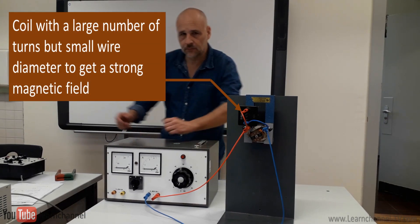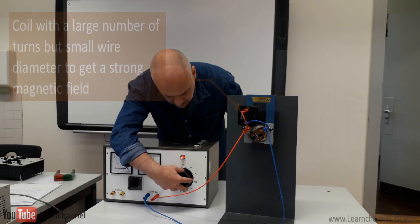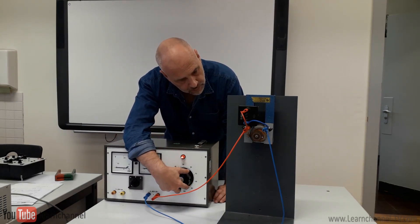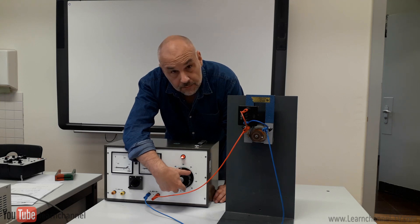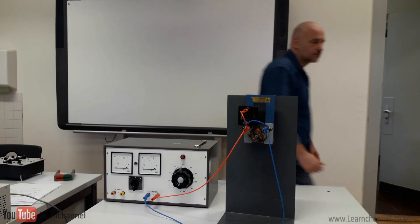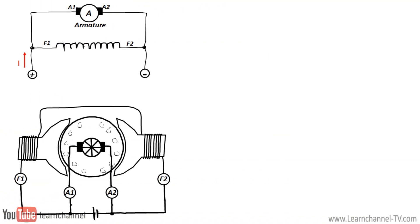Connect the armature winding in parallel to the field winding, you get a DC shunt motor. The field winding consists of thin but many turns to achieve a strong magnetic flux, so both winding are exposed to the same power supply. This motor is able to maintain a constant speed with any load, but how so?